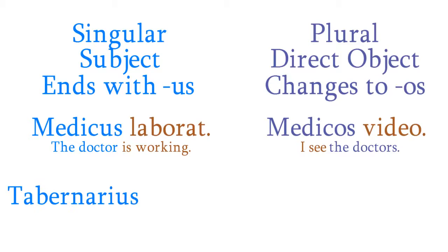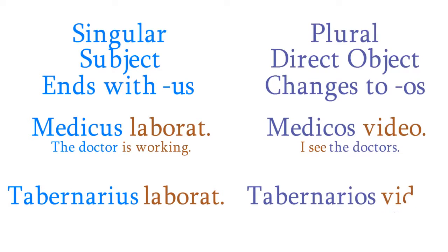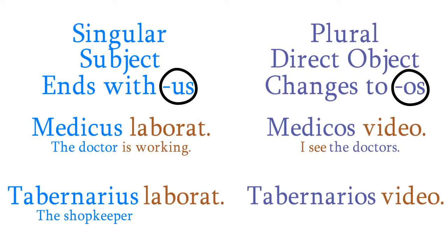Here are two more sentences showing the difference between the us and os endings: tabernarius laborat and tabernarios video — the shopkeeper is working, and I see the shopkeepers.